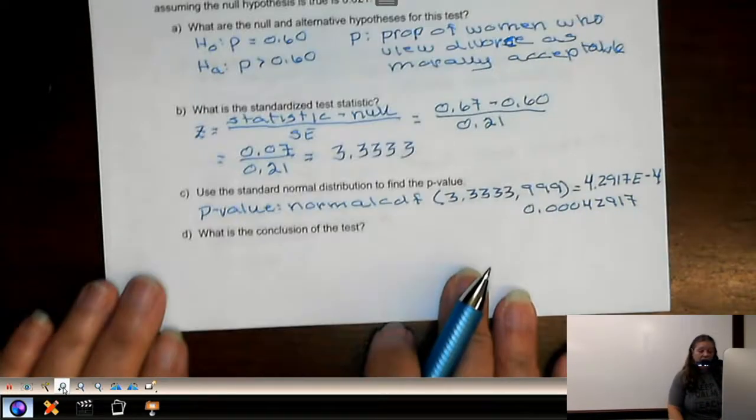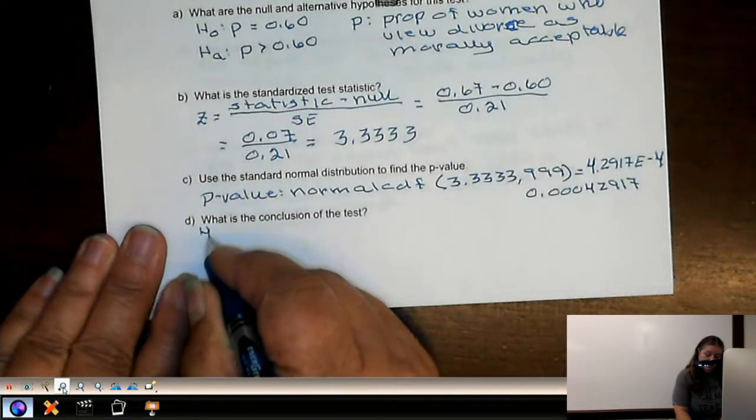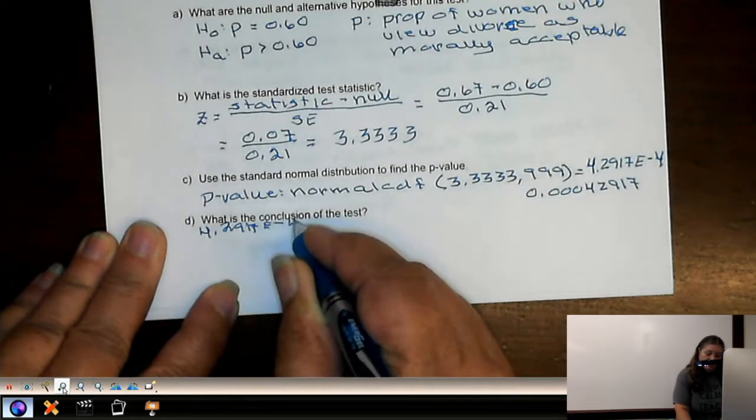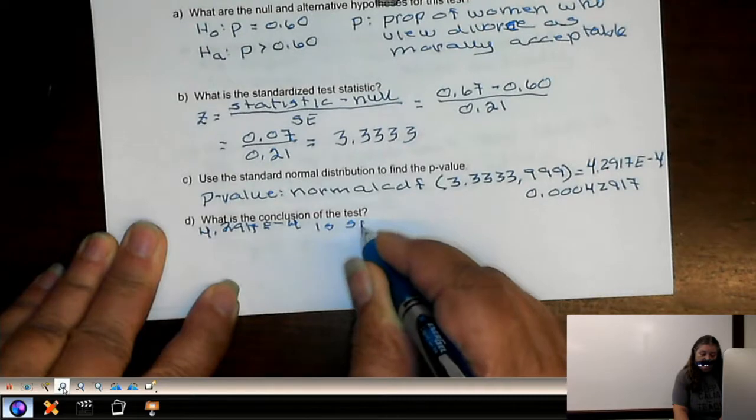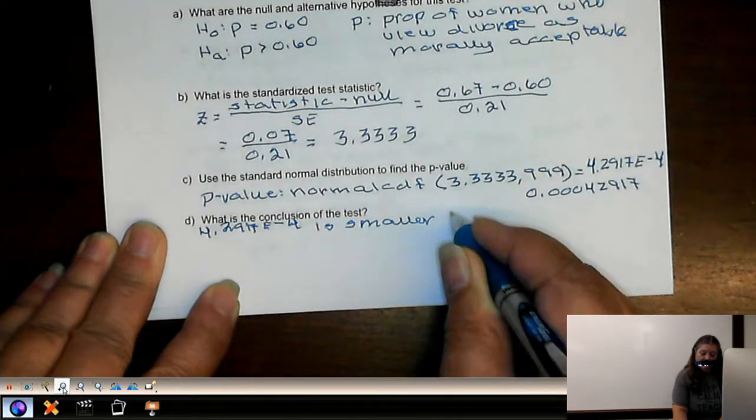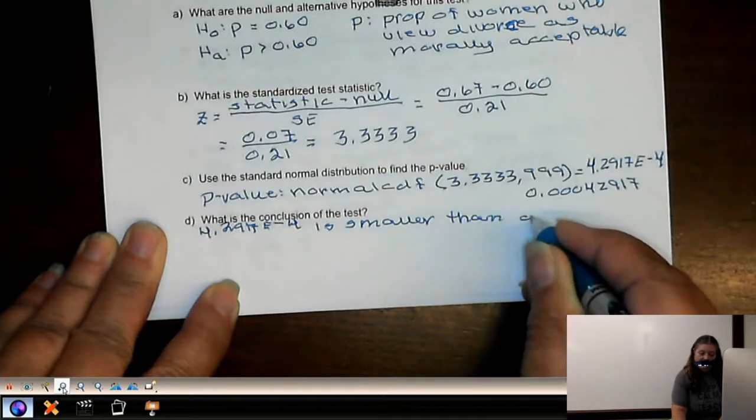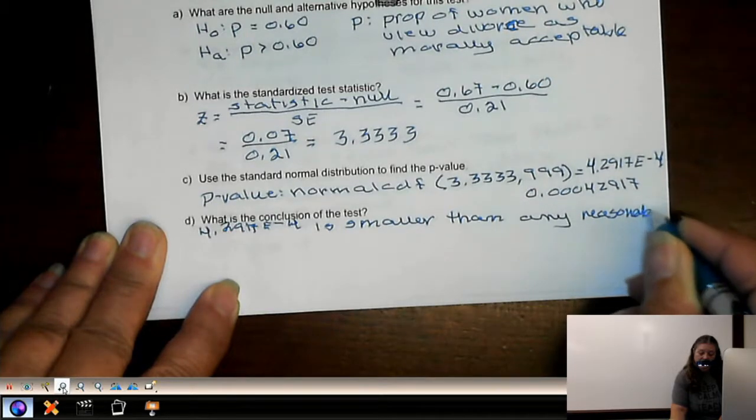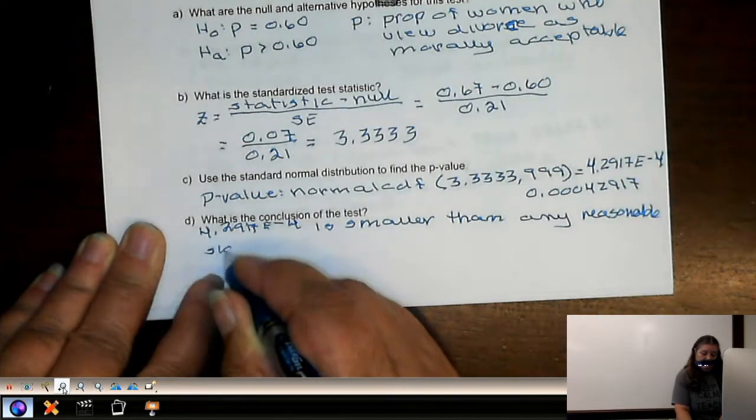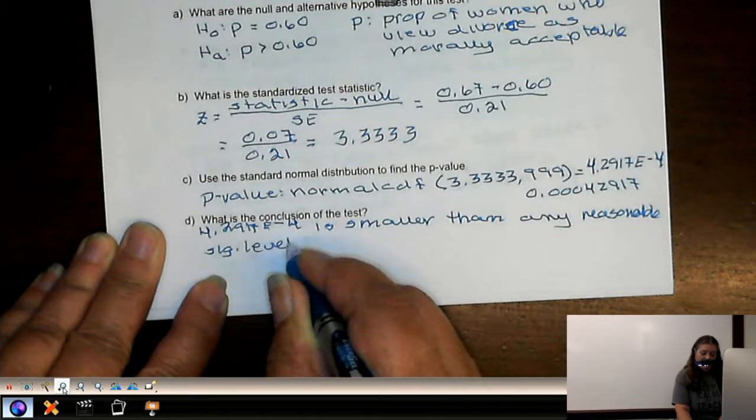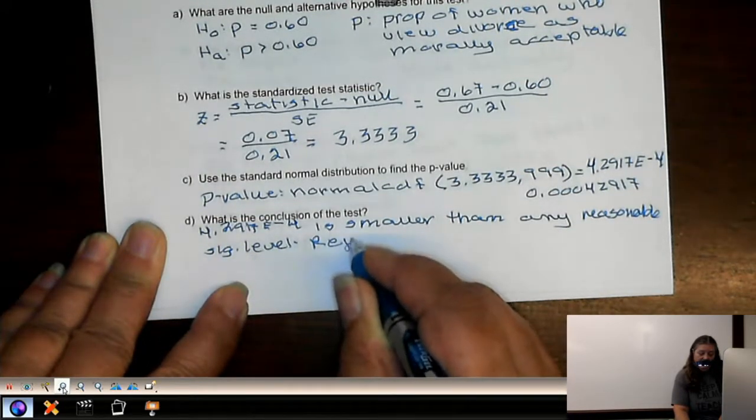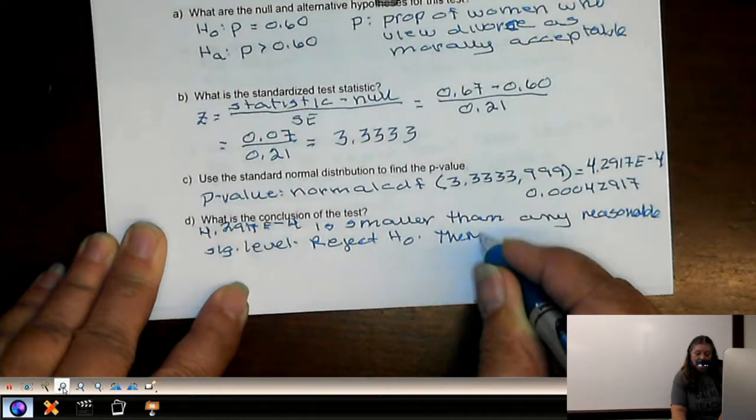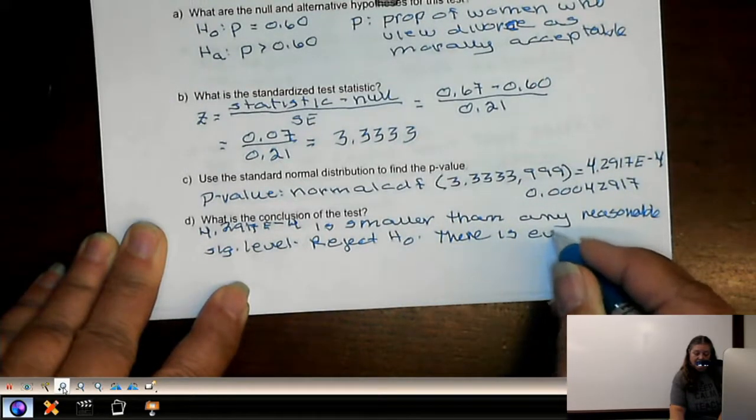Now the conclusion of the test. 4.2917e negative 4 is smaller than any reasonable significance level. We reject the null hypothesis. And there is evidence that more than...